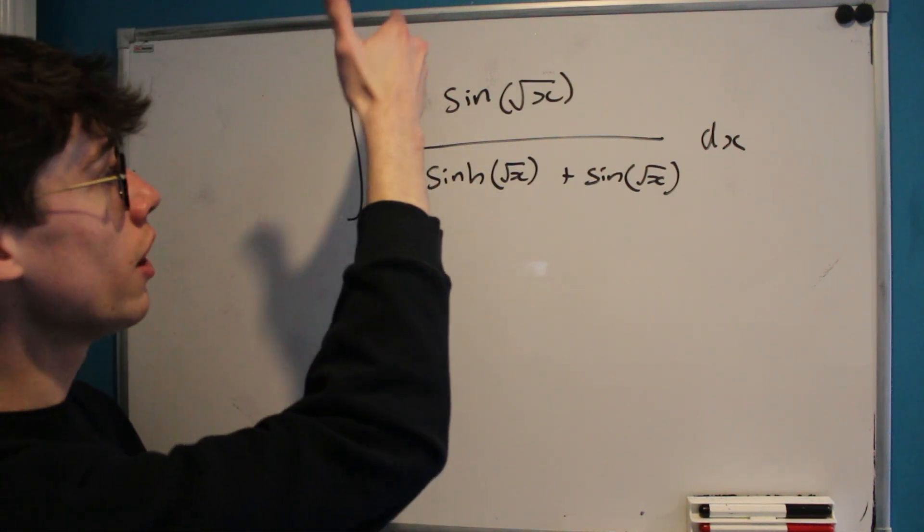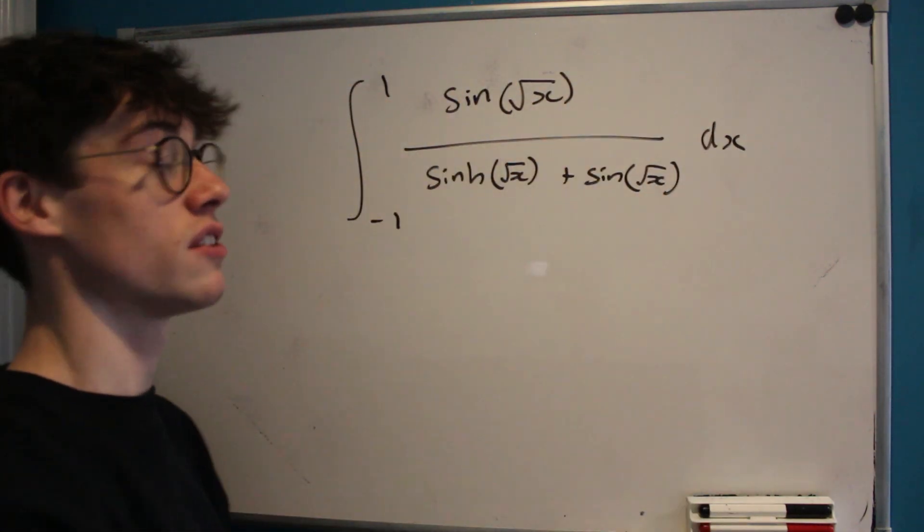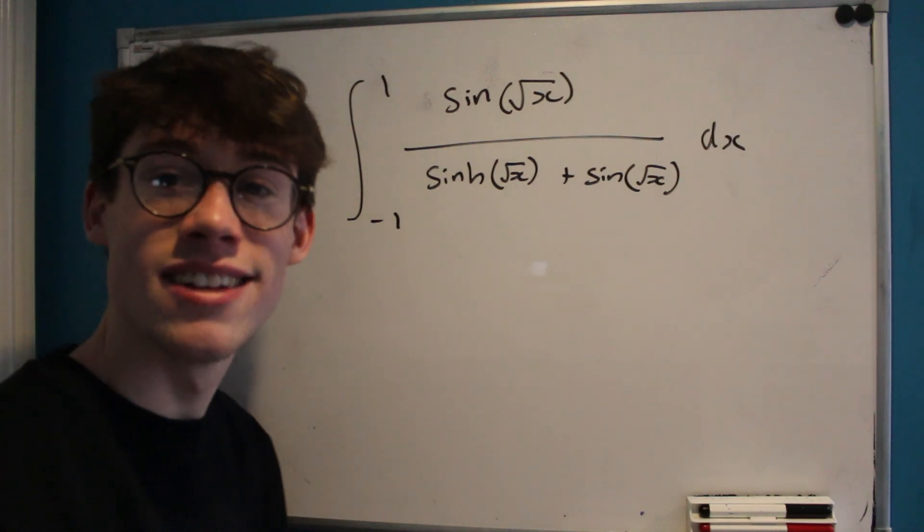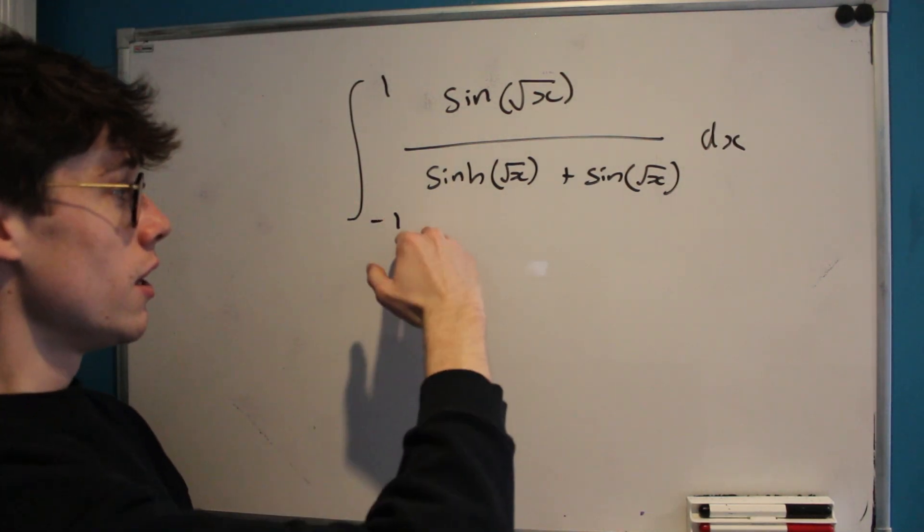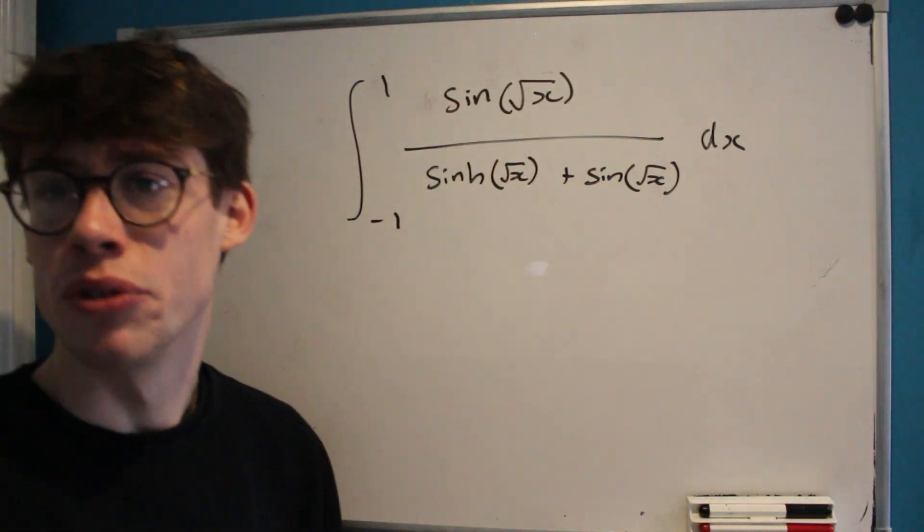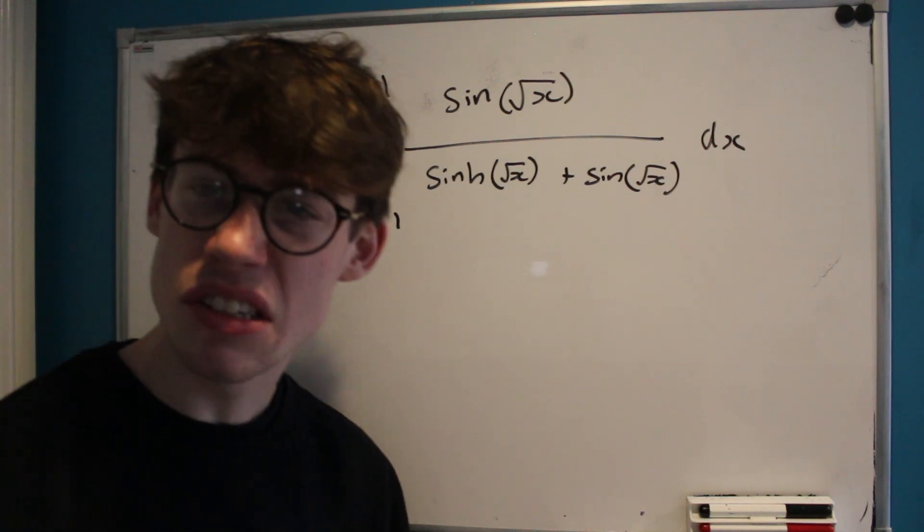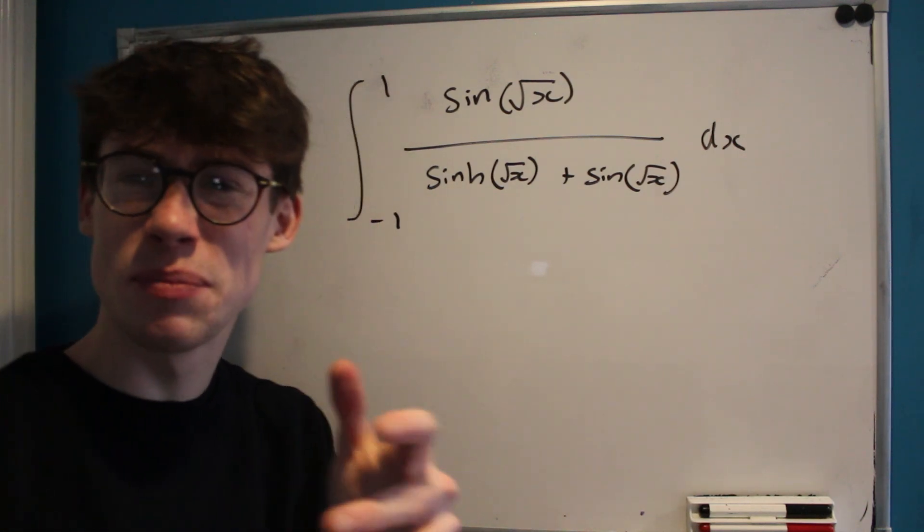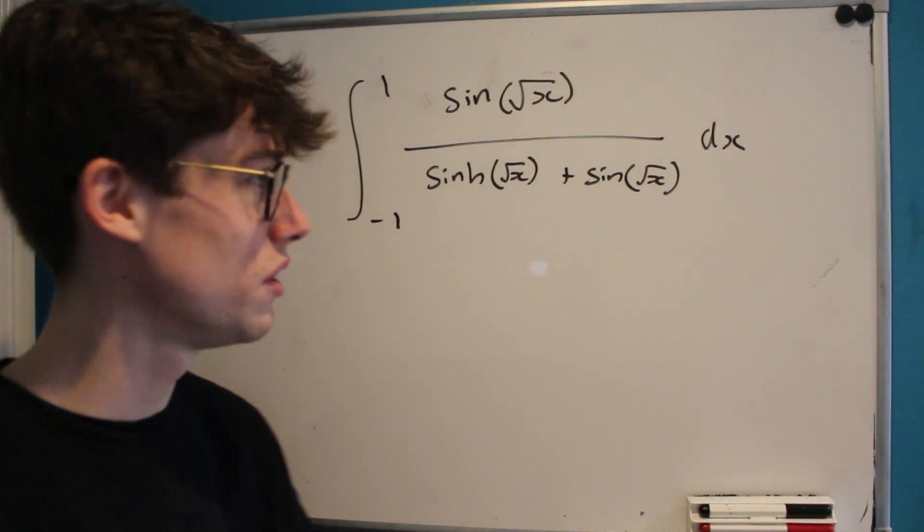It's the integral from negative 1 to 1 of sine root x over sinh root x plus sine root x. And this is a really interesting problem because we're integrating from minus 1 to 1 but we're taking the square root. So straight away we know there's something odd going on because we're allegedly square rooting negative numbers, but of course that's going to introduce complex numbers into the mix that we don't really want.